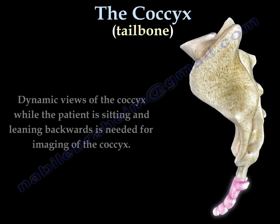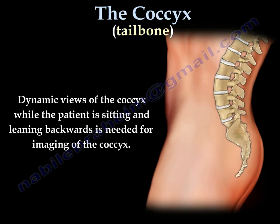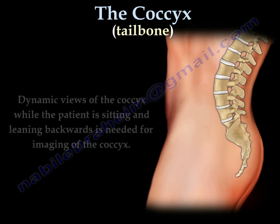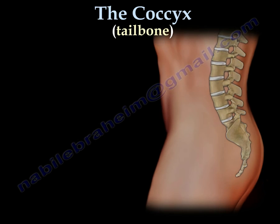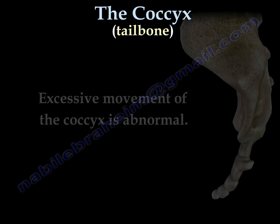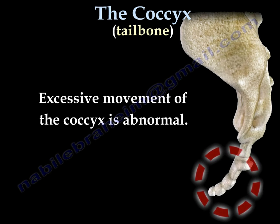Dynamic views of the coccyx when the patient is sitting and leaning backwards is the best way to image the coccyx. We compare these x-rays to non-weight bearing films when the patient is standing or lying to the side. Excessive movement of the coccyx is abnormal.